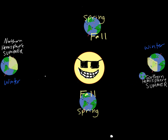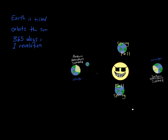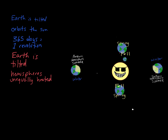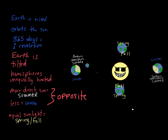In between those two points, the Earth's north and south hemispheres are getting about the same amount of sunlight, so we call that spring or fall — those are our transition periods. In review: the Earth is tilted, the Earth orbits the sun taking 365 days to make one revolution. Because the Earth is tilted, our hemispheres are unequally heated. It's a common misconception that the Earth gets closer or farther from the sun in the summer or winter — the Earth makes pretty close to a circular orbit, and the distance from the sun does not determine summer or winter. How much direct sunlight a hemisphere is getting is what tells us if it's going to be summer or winter.